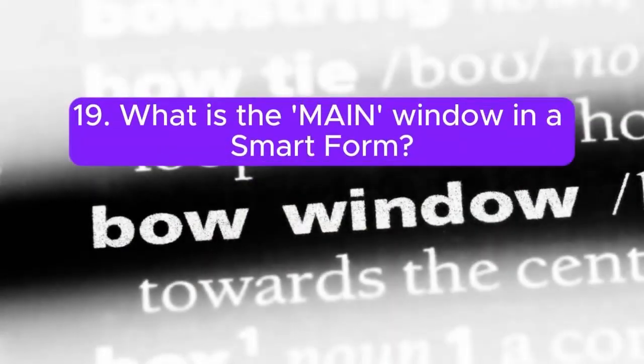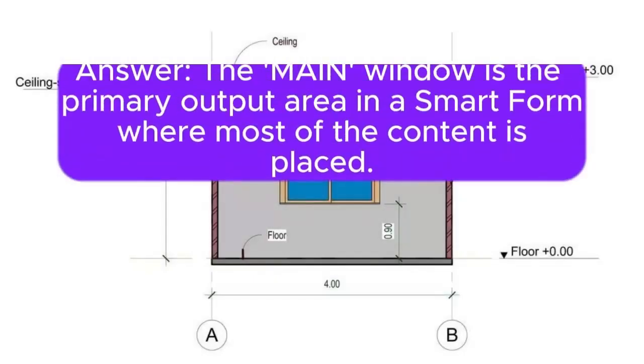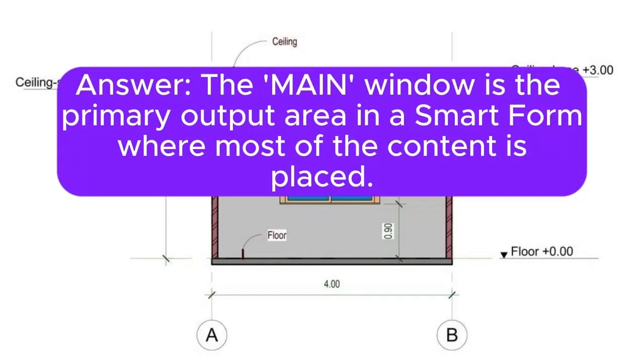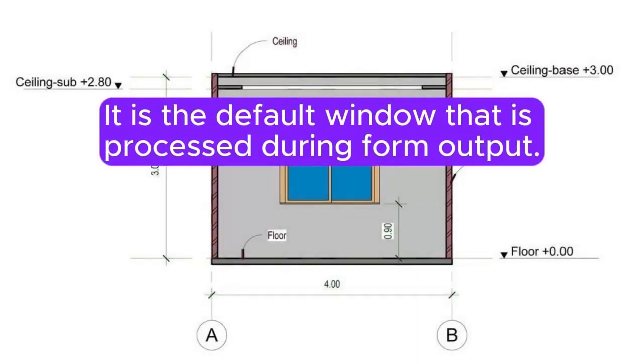19. What is the main window in a SmartForm? Answer: The main window is the primary output area in a SmartForm, where most of the content is placed. It is the default window that is processed during form output.